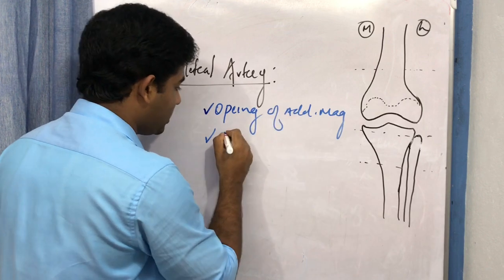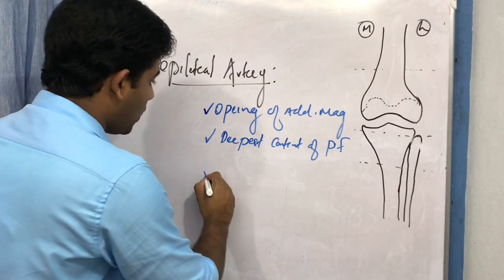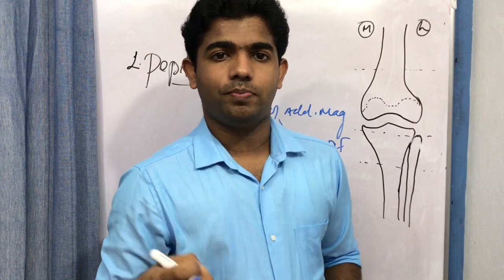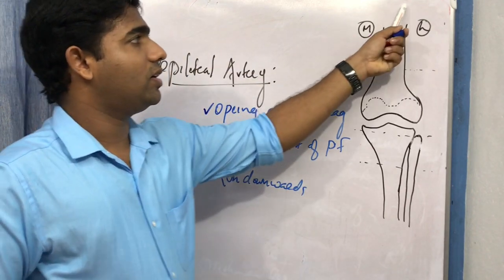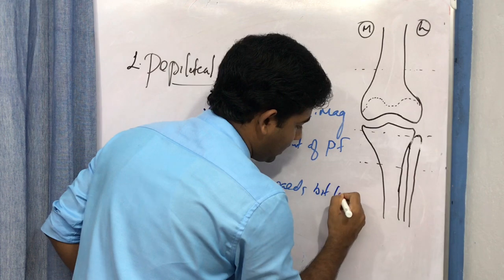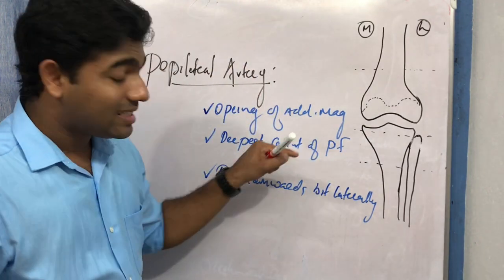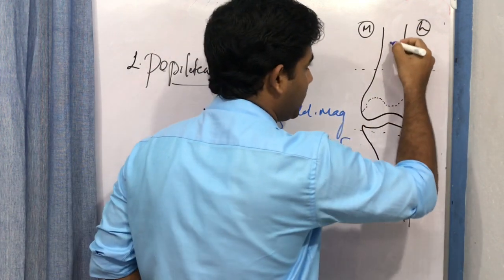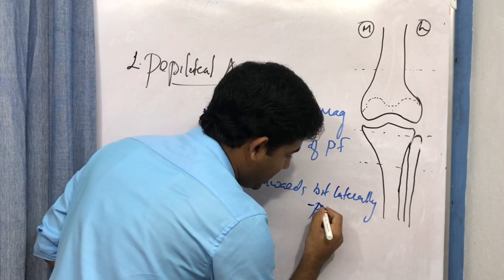The popliteal artery is the deepest content of the popliteal fossa. It runs downwards with a slight lateral orientation. Compare this to the tibial nerve which runs vertically downwards, and the common peroneal nerve which runs more laterally toward the biceps femoris. The popliteal artery runs almost vertically downward but with a slight lateral orientation.